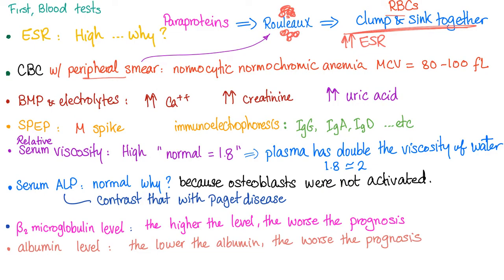Serum alkaline phosphatase is normal because only osteoclasts are activated, not osteoblasts. Contrast this with Paget's disease, where ALP is high because osteoblasts are activated first before osteoclasts. Beta-2 microglobulin level: the higher the level, the worse the prognosis — it has prognostic value.